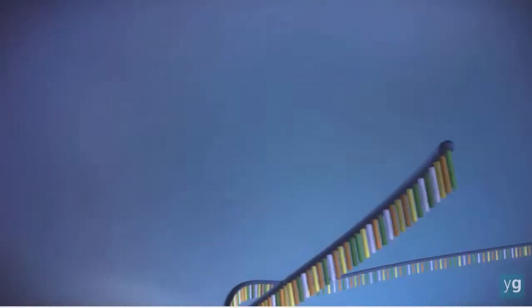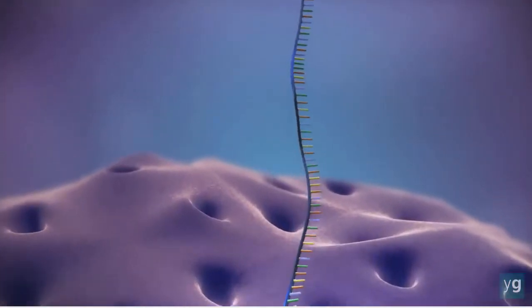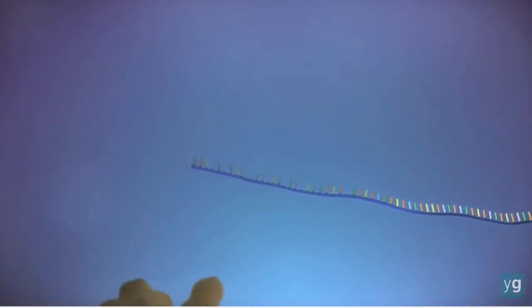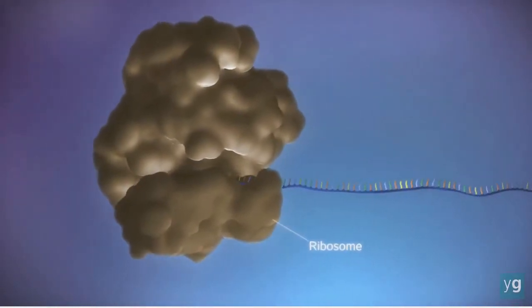The messenger RNA then moves out of the nucleus into the cytoplasm. Protein factories in the cytoplasm, called ribosomes, bind to the messenger RNA.